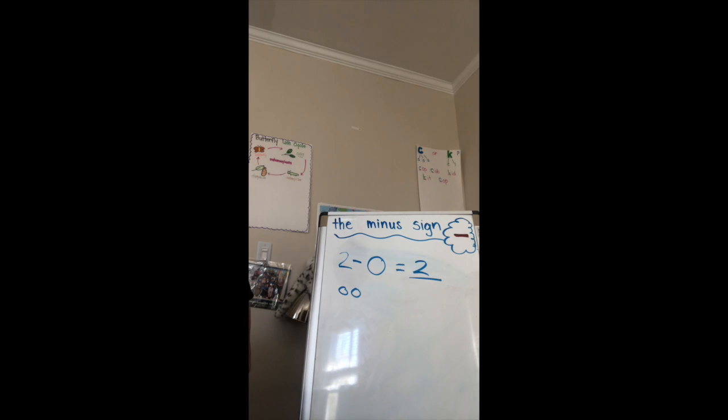Or two take away zero equals two. Remember, we're starting to use this straight line symbol to show us that we're taking away.